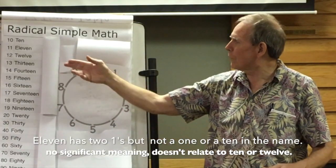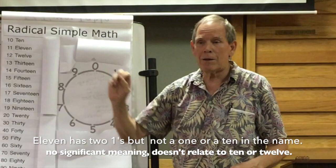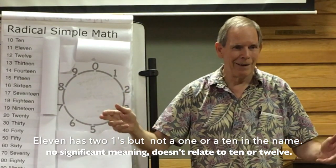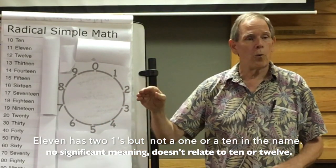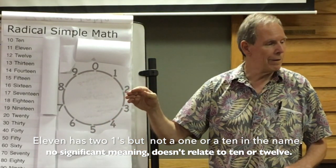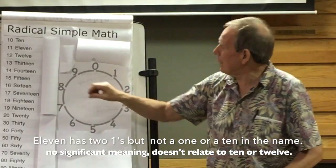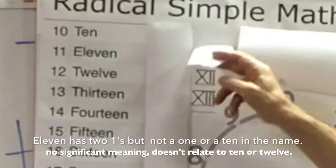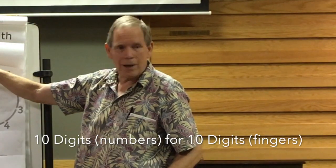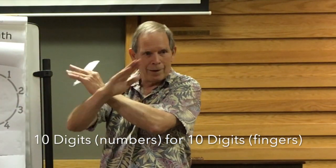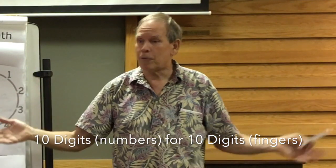And twelve is the same way. You know what eleven means? I bet nobody knows, and even mathematicians don't know. What it means is one left over. That's what it means, and they're not sure, but they believe that it comes from Roman numerals. X is ten, and then you count to ten, and now ten was how many we counted to.